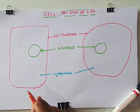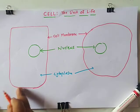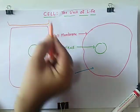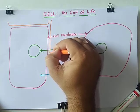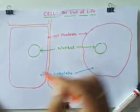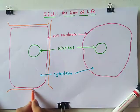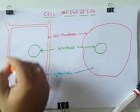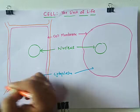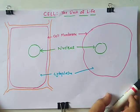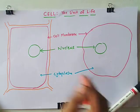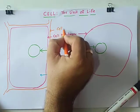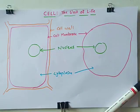You can draw the cell wall, which is only available in the plant cell, as an additional outer layer. The cell wall, as we already discussed, is one of the freely permeable membranes.